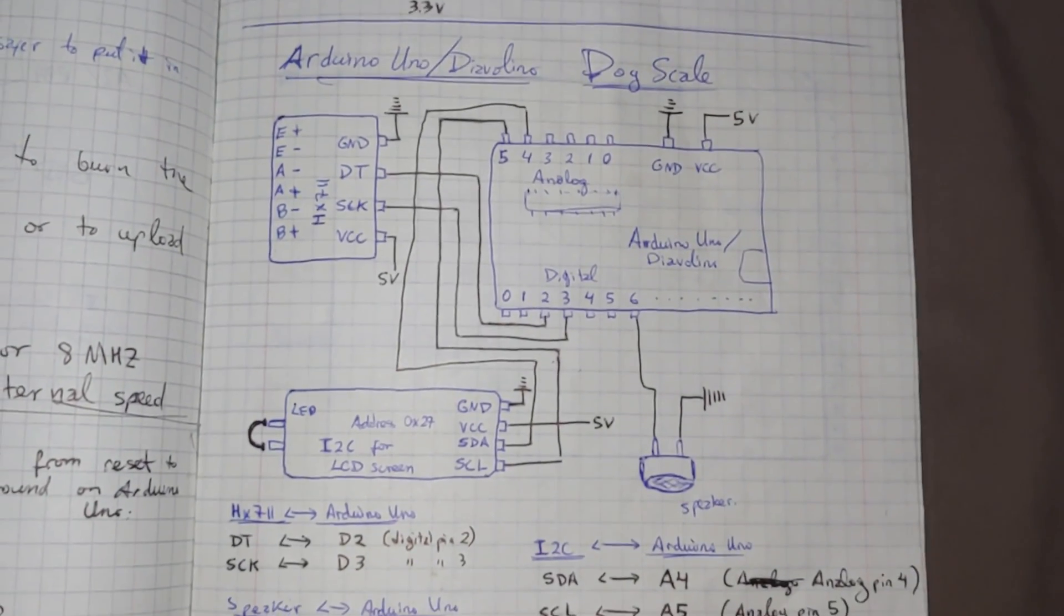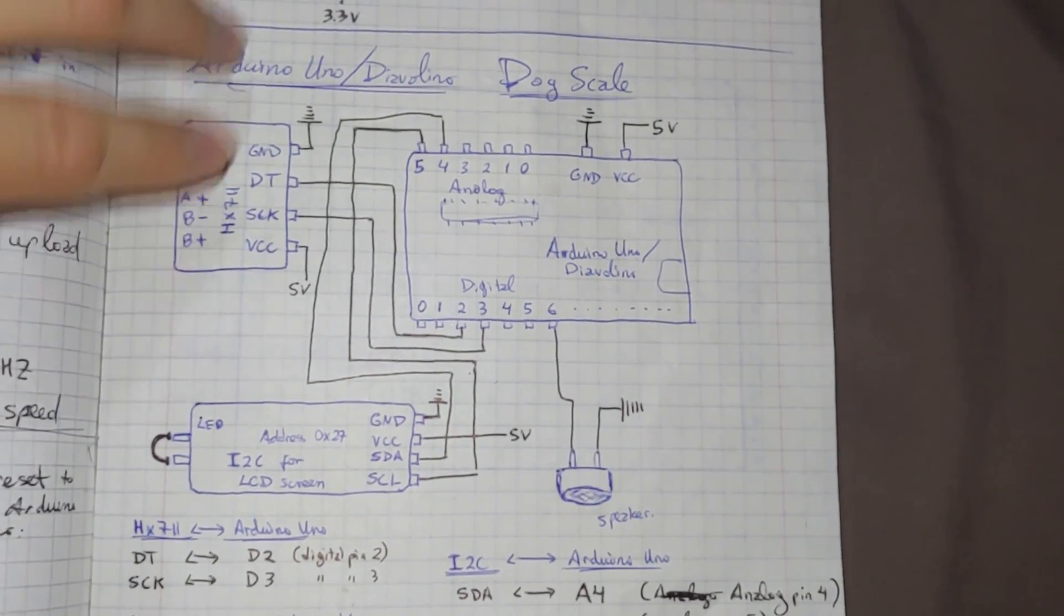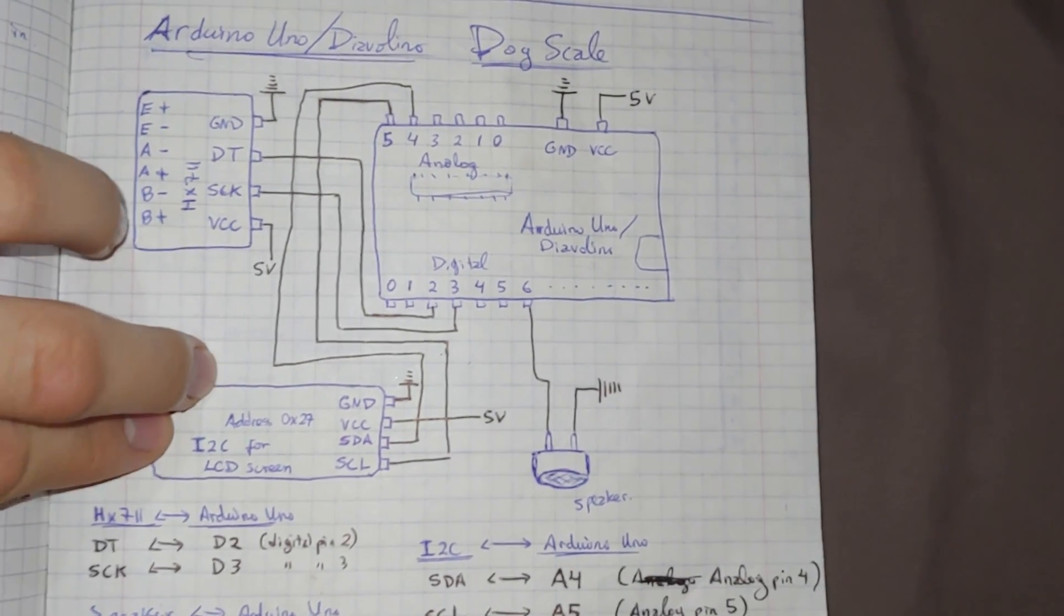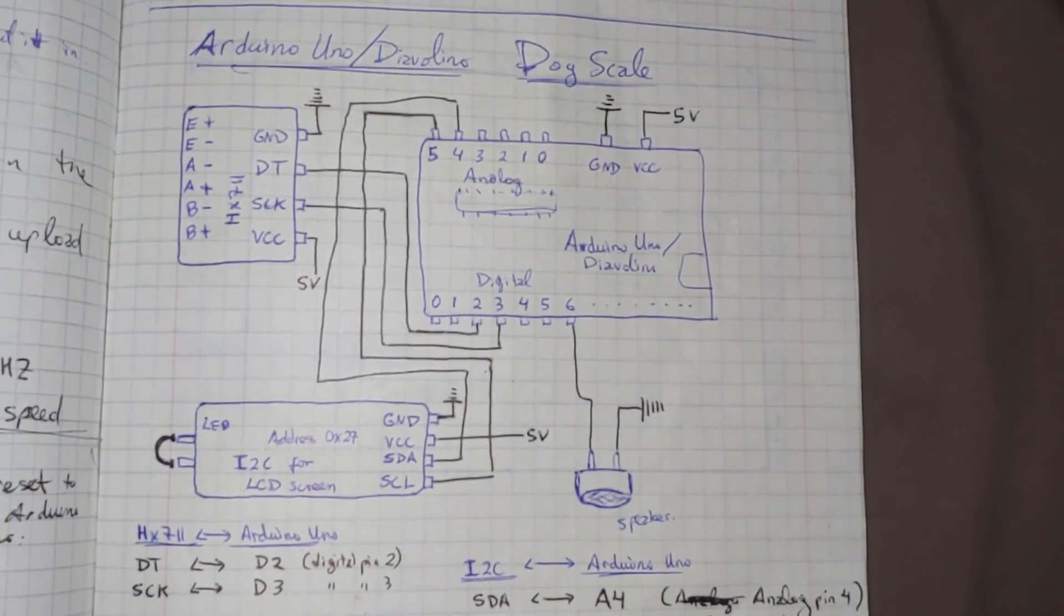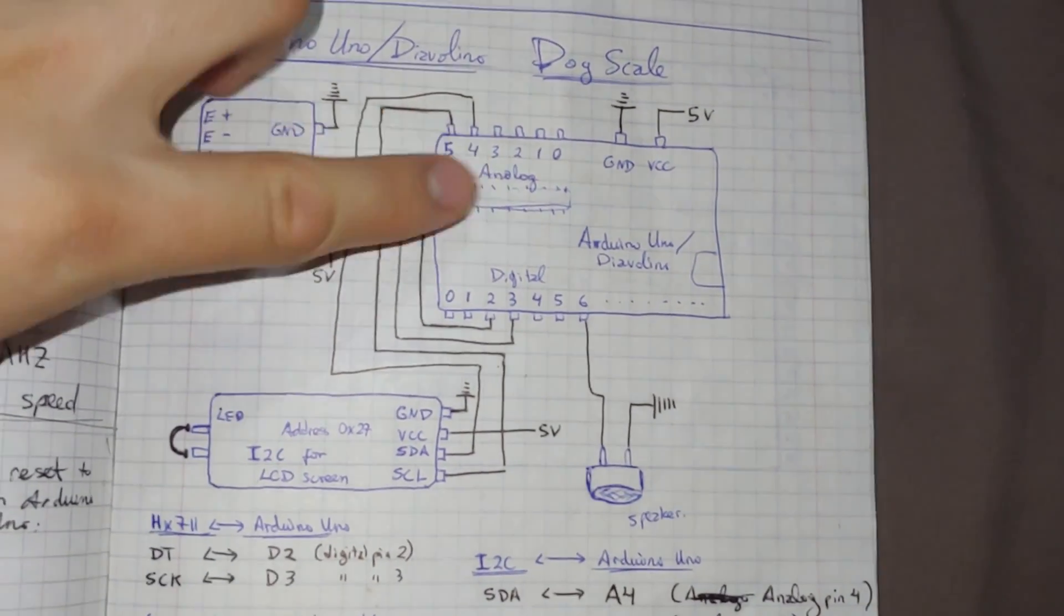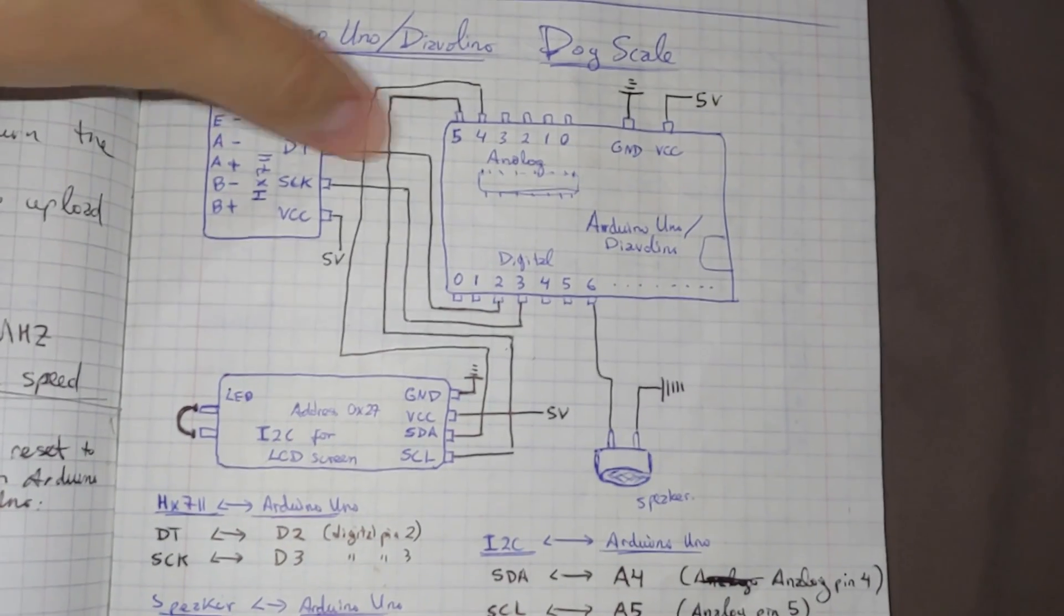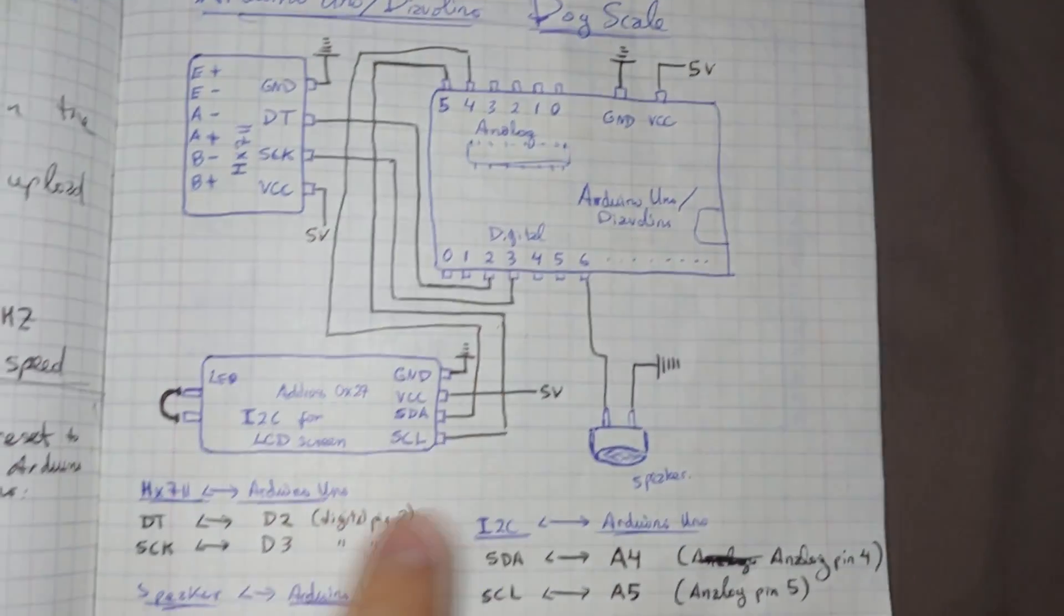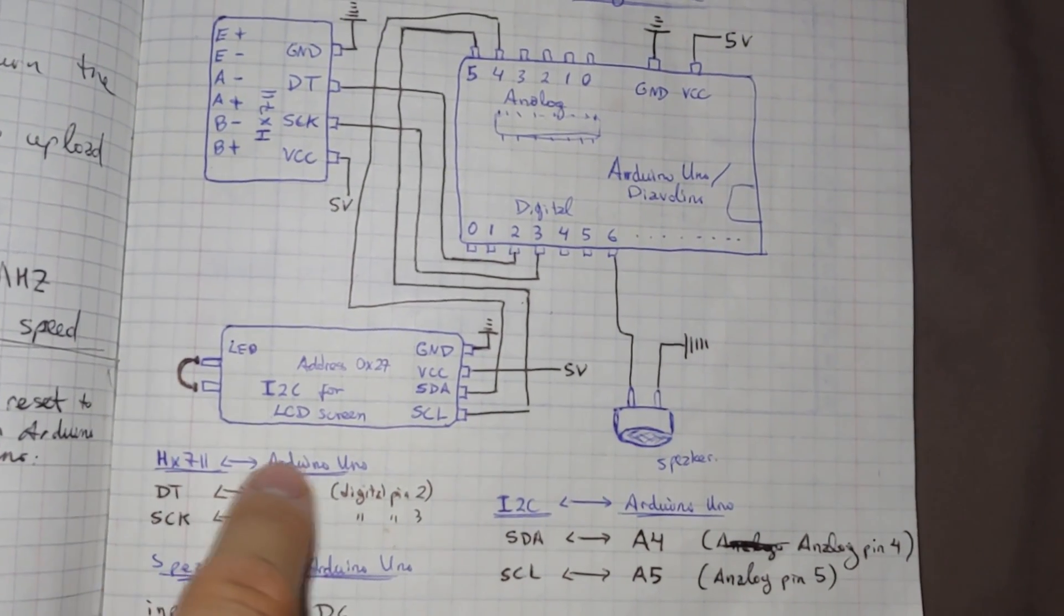Here we see the diagram for the dog scale using an Arduino Uno. This is the HX711 module, this is the Arduino Uno, the I2C module connected to the LCD, and the piezo speaker that I included. We'll begin by connecting the HX711 module to the Arduino. The data pin will go to digital pin 2, and clock pin will go to digital pin 3, which is also written here. The HX711 to Arduino Uno.